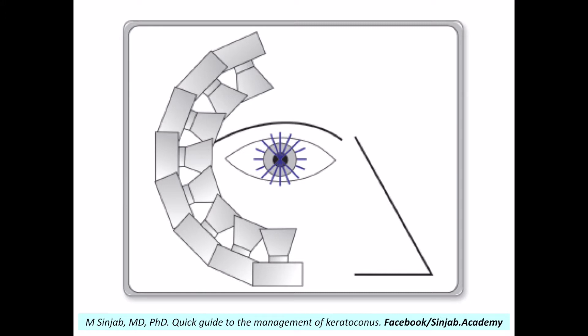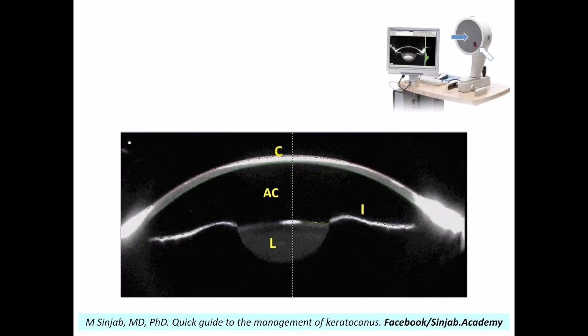This is the Scheimpflug camera — the principle of the Scheimpflug camera — which is a lateral camera taking captures of the media of the eye through which the central blue slit light penetrates. This is the image given by the Scheimpflug camera. As we see here, we can see the cornea, the anterior chamber, the anterior surface of the iris, and a part of the lens. We can see the full thickness of the lens when the pupil is fully dilated before taking the capture.